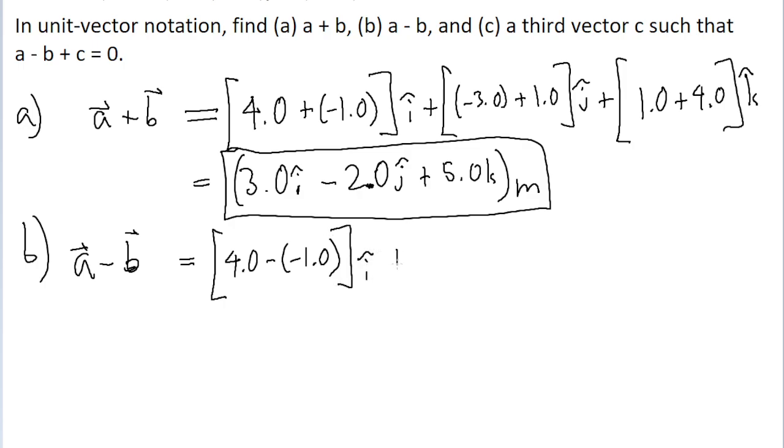That's the i component. For the j component, instead of being negative three plus one, instead it's negative three minus one. And for the k component, it's one minus four.